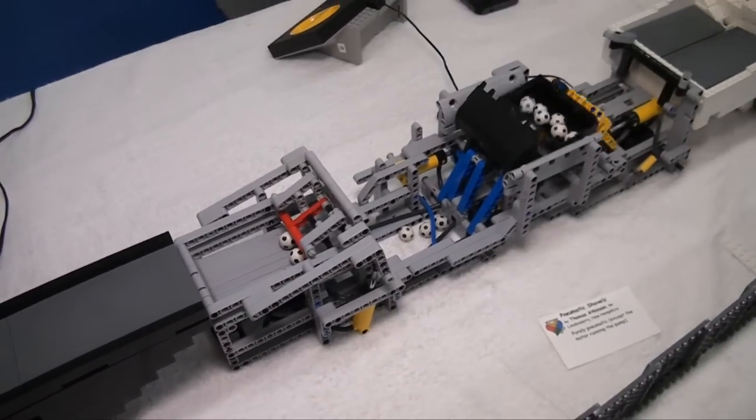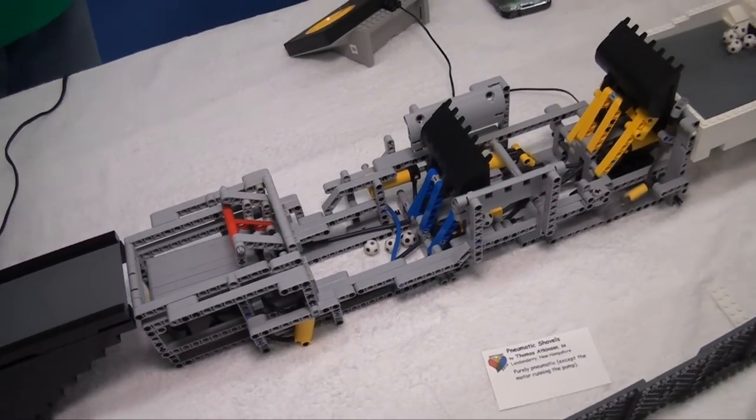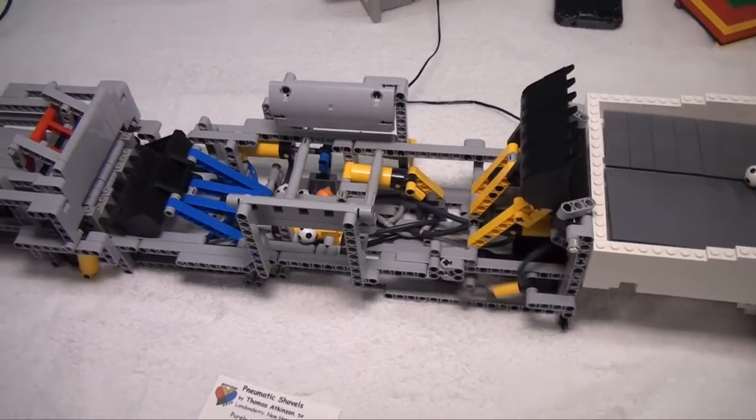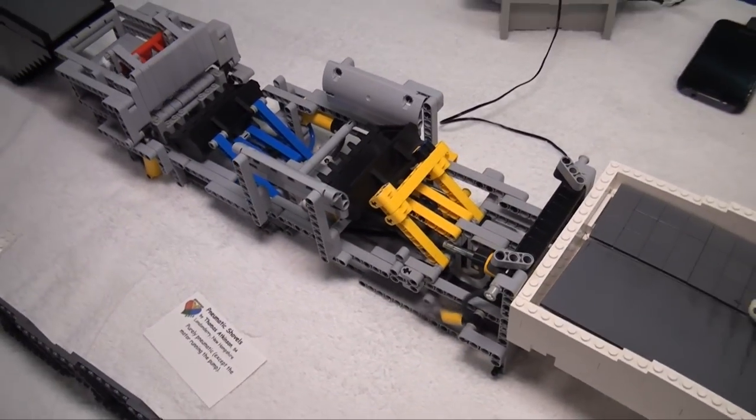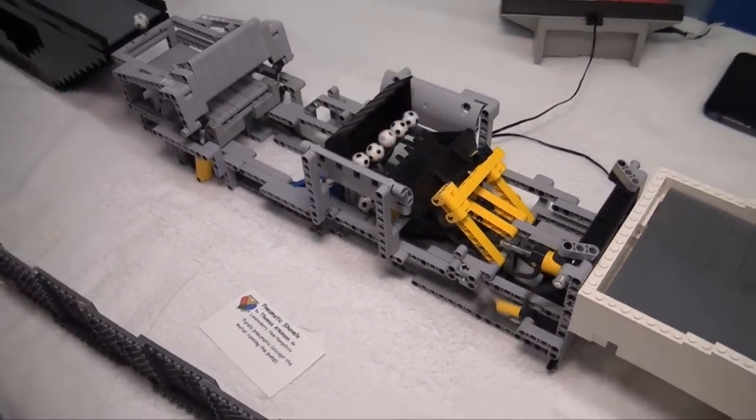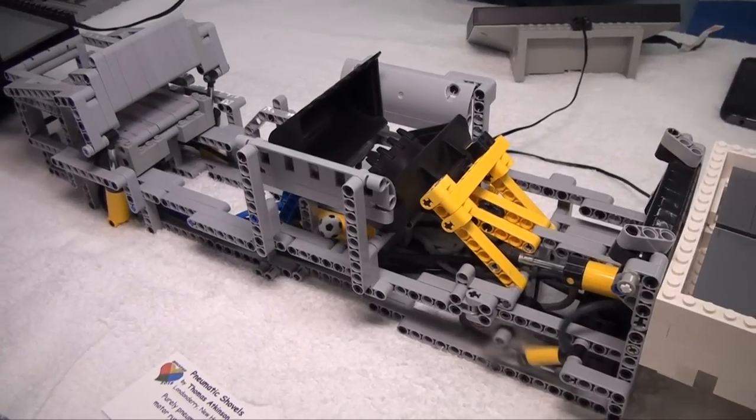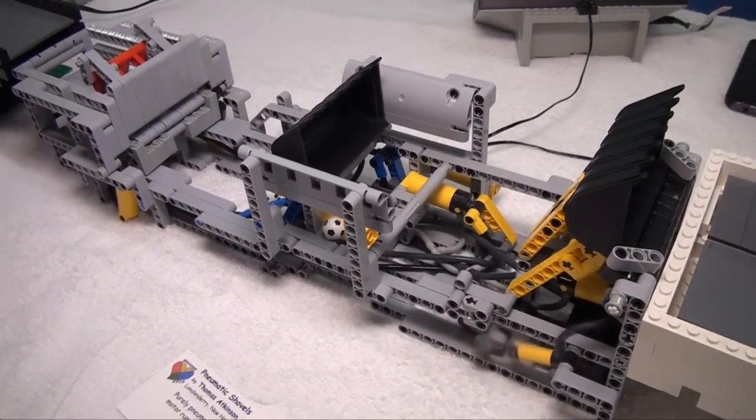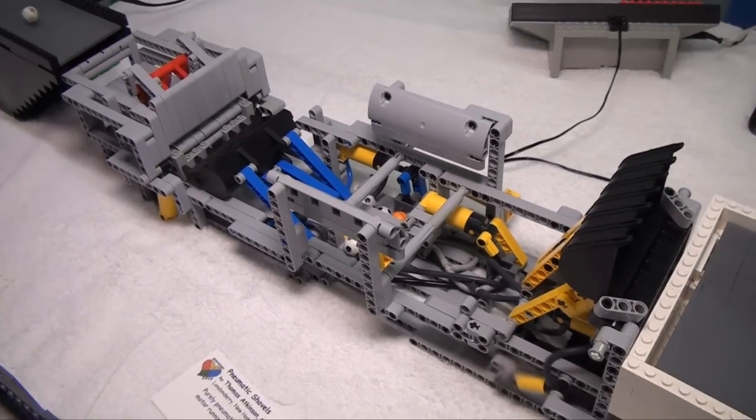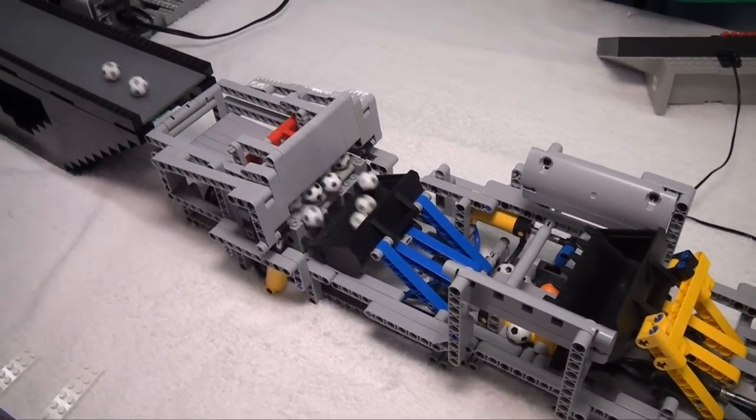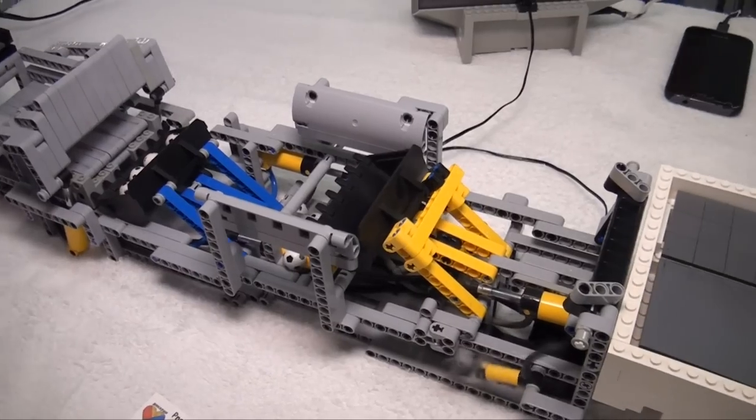The first module we come to is a pneumatic module. This is run by a little compressor piece, and everything else in the whole module is run on compressed air. It's a series of pneumatic cylinders and switches. Some of the cylinders move things, and some of them just move switches. It runs around in a loop.